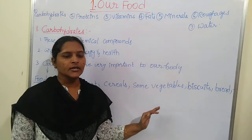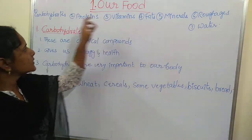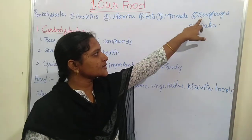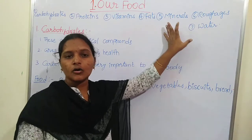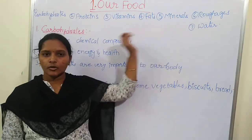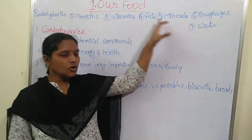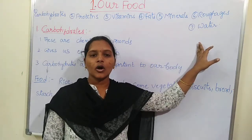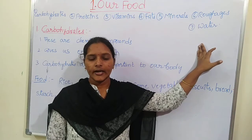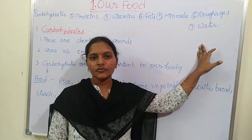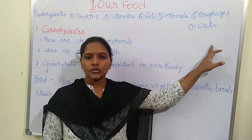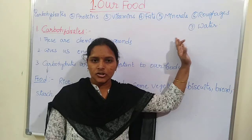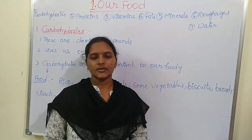The components are: carbohydrates, proteins, vitamins, fats, minerals, roughage, and water. These seven are called the nutrition of food. These seven are required for our body — without them we can't get any sort of energy or any sort of growth. These are also called the food components present in food.